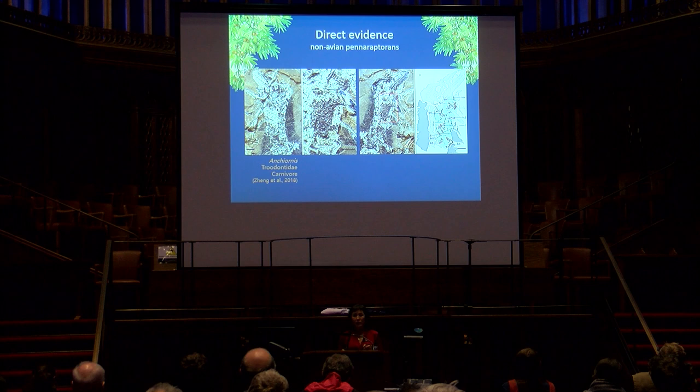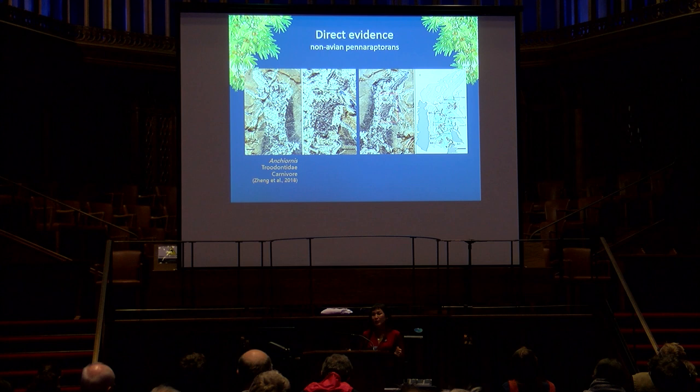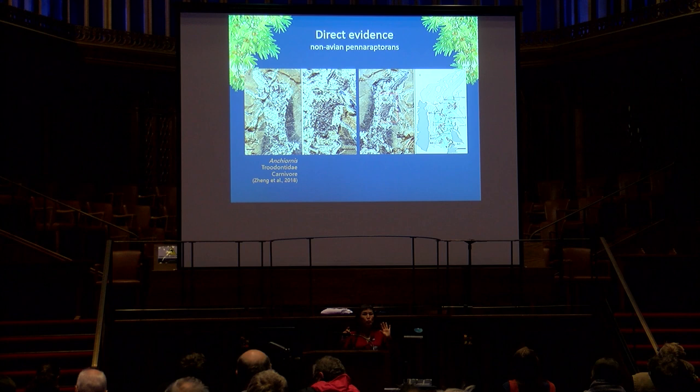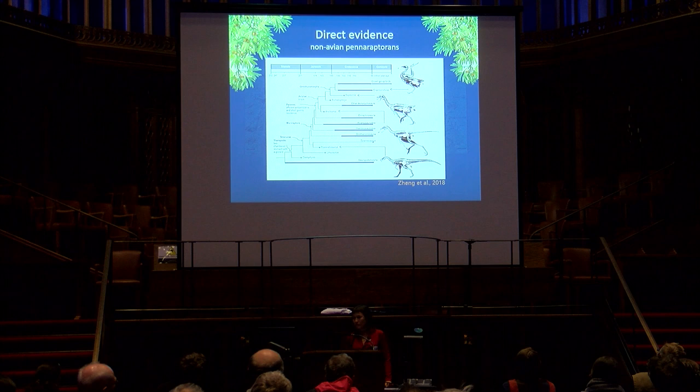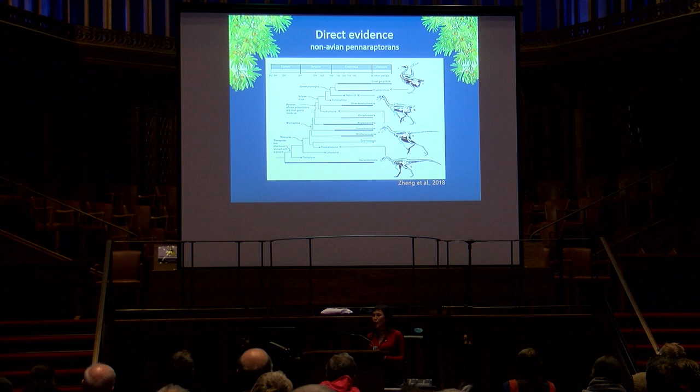The other important thing about this specimen is that three of the four specimens preserving direct evidence of diet preserve fish bones. But if you were to look at the general skeletal and integumentary morphology of Anchiornis, you would never say this is a piscivore. This really shows us that in the absence of direct evidence, we must use extreme caution when inferring diet based on skeletal indicators. I recommend everybody check out this recent paper — primarily because it has a really funny picture of Anchiornis lighting the candle at both ends.